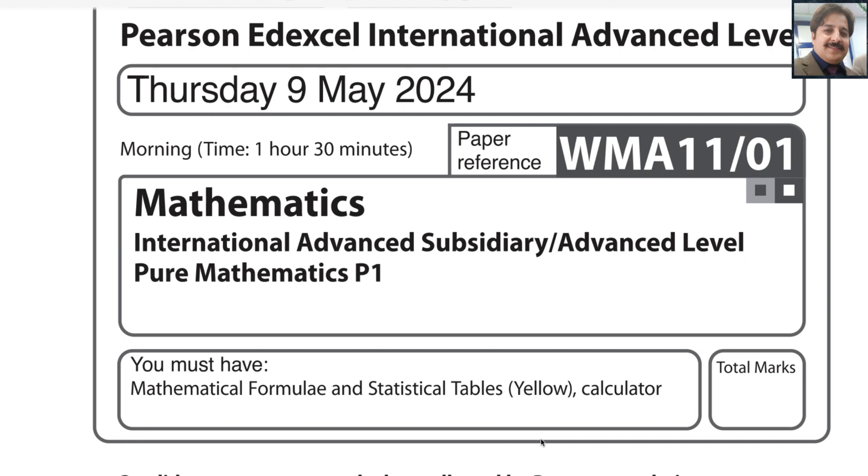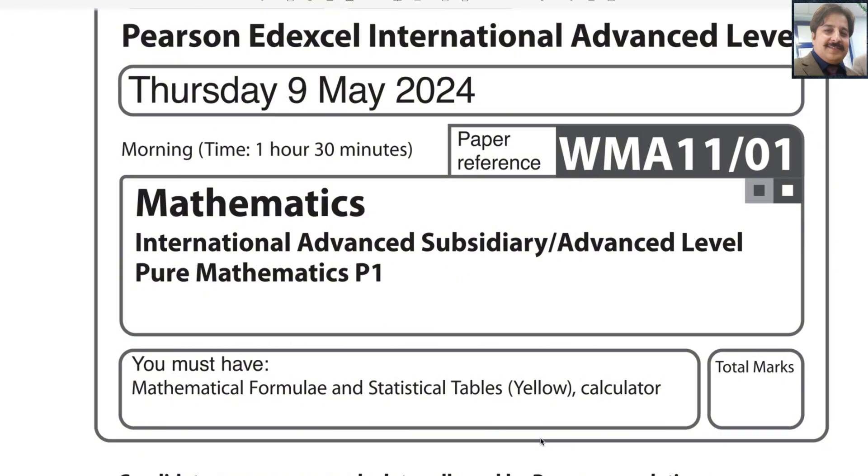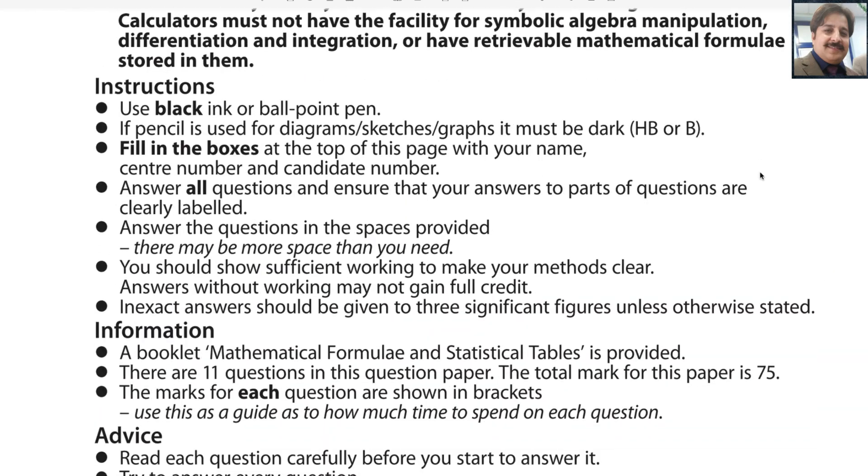Today I am going to start Pearson Edexcel A-level exam for Pure Math 1. Paper reference code is WMA11/01. Let us start with question number 1.